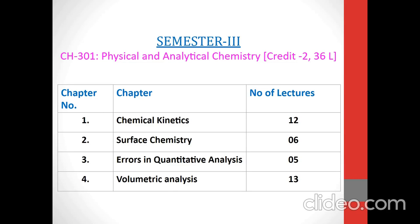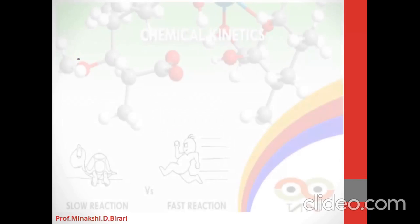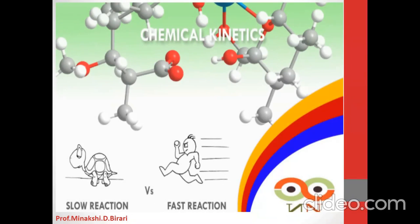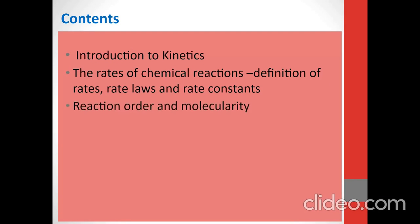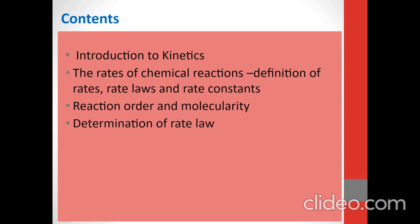Now let us start section 1, Physical Chemistry, and the 1st chapter of Physical Chemistry, i.e., Chemical Kinetics. Chemical Kinetics includes various topics: Introduction to Kinetics, the rates of chemical reactions, definition of rates, rate laws and rate constants, reaction order and molecularity, and determination of rate law.